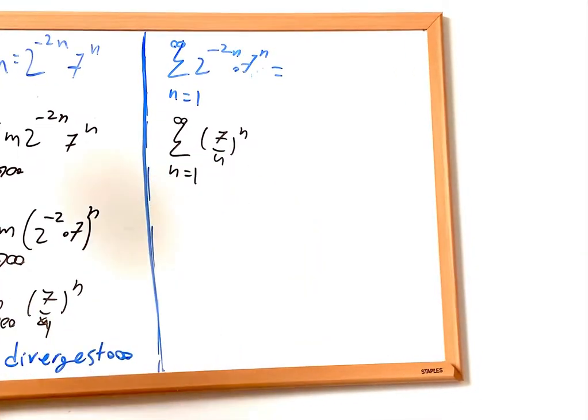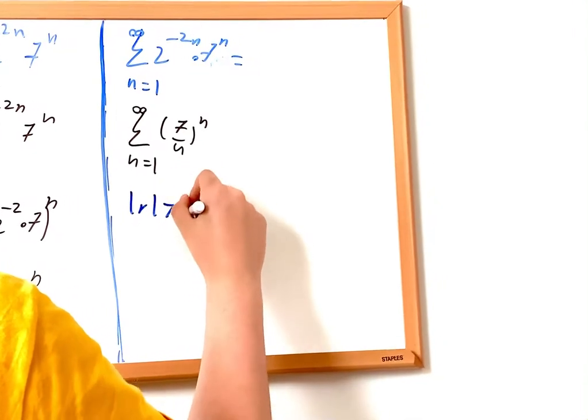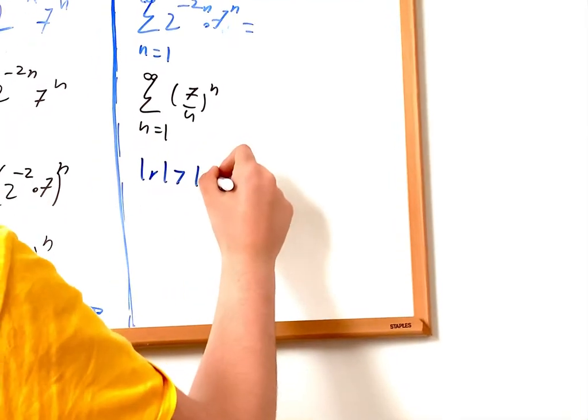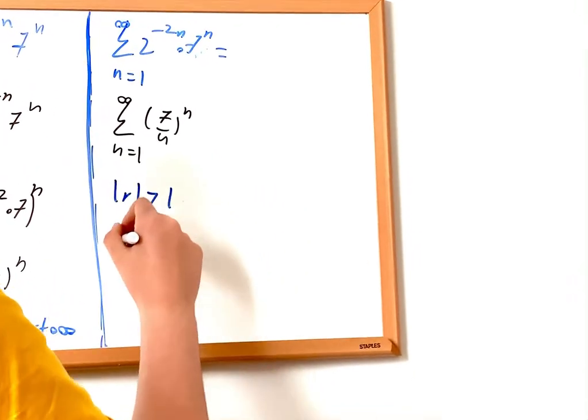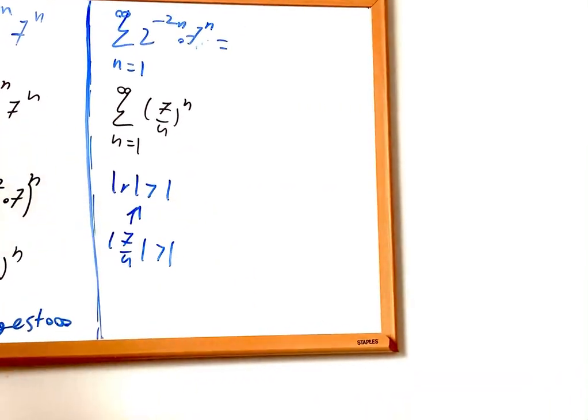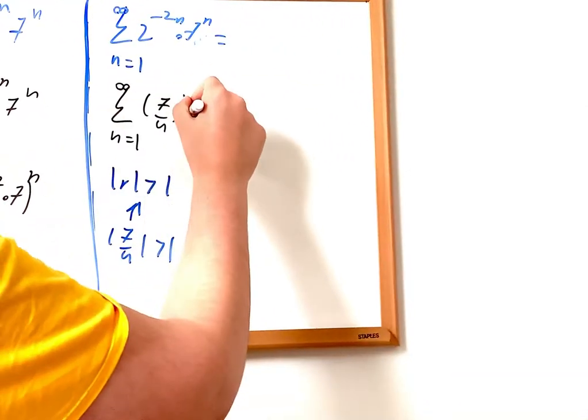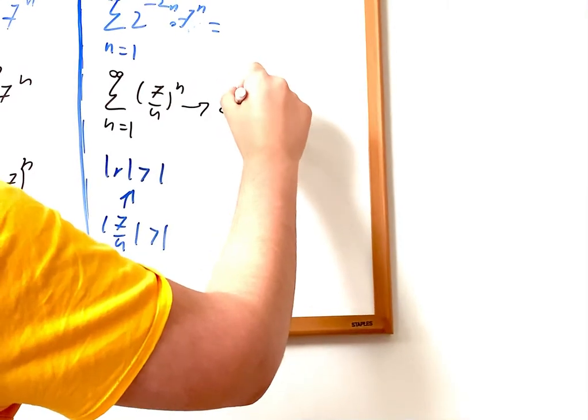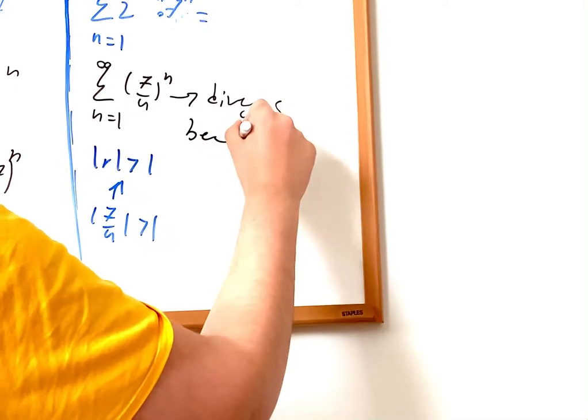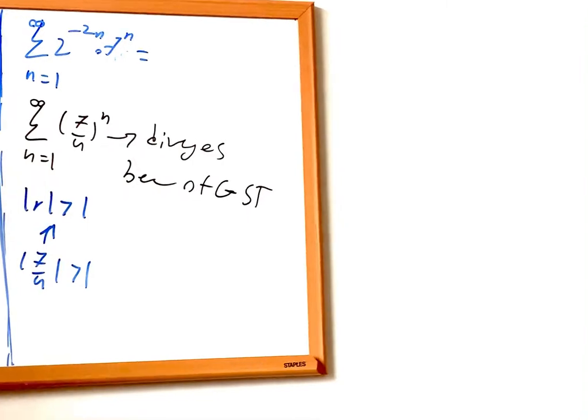if the absolute value of r is greater than 1, we can say this expression or this sum diverges. So if we use this rule for this, we see that absolute value of 7 over 4 is bigger than 1, which is just 1.75 and it's bigger than 1. So we can say that this expression, this sum diverges because of geometric series test, GST, geometric series test.